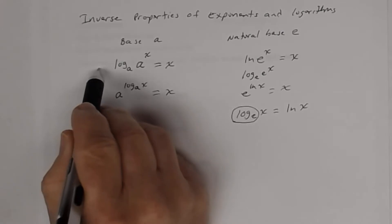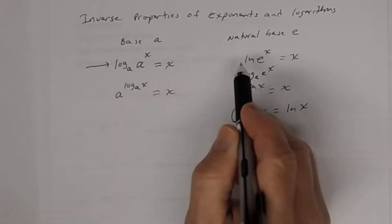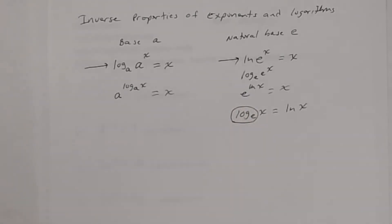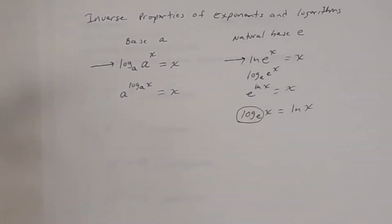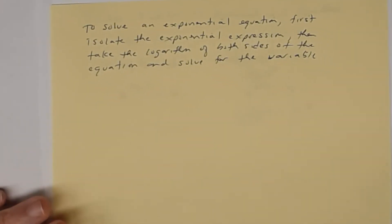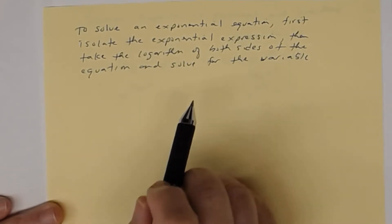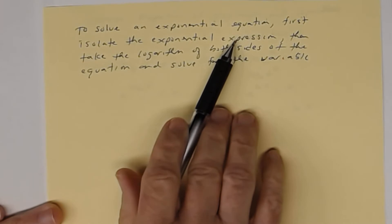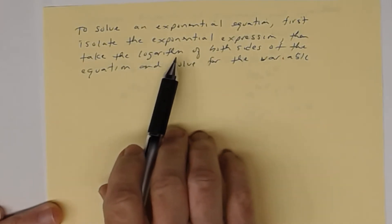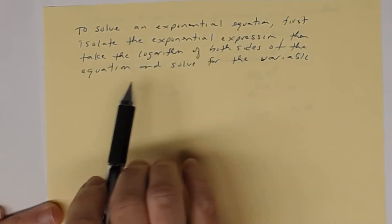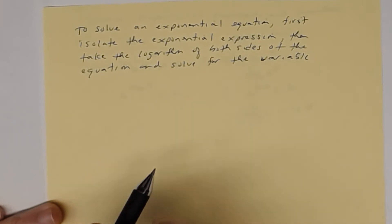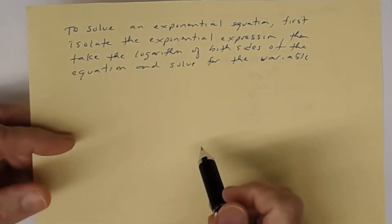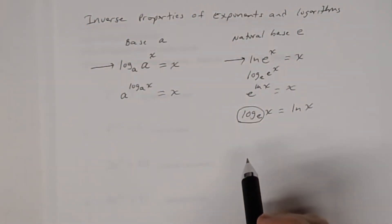We're going to use both of those properties in these problems. Remember: to solve an exponential equation, first isolate the exponential expression, then take the logarithm of both sides, and then solve for the variable — that's where you use the properties of logarithms and exponentials.